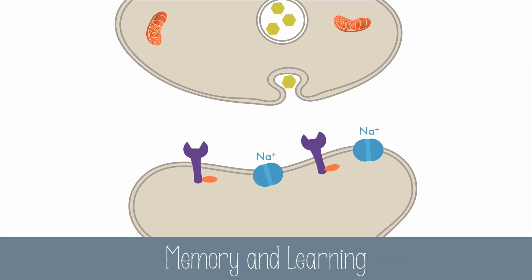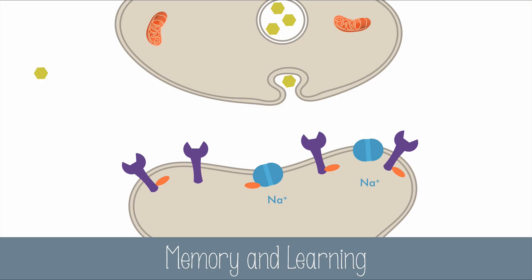Slow-acting neurotransmitters play a major role in memory and learning. The secondary messengers can persist for days and can lead to changes in the synapse. The neural connections are strengthened when slow-acting neurotransmitters promote an increase in postsynaptic receptors or increase the rate of ion movement through a channel.